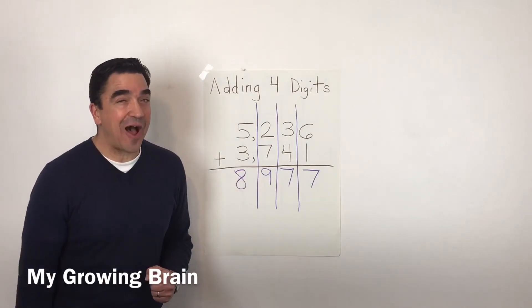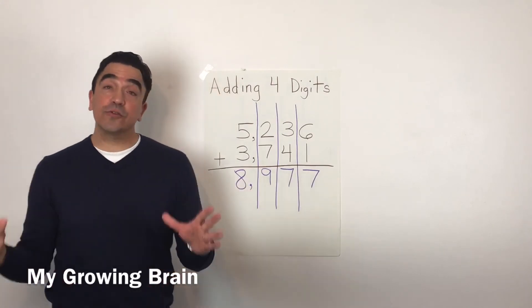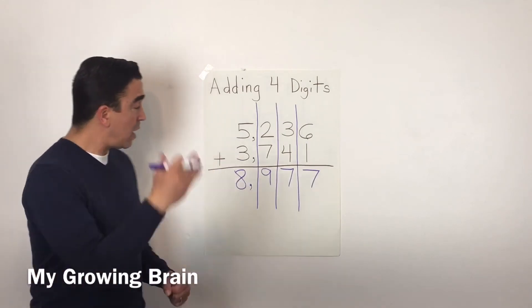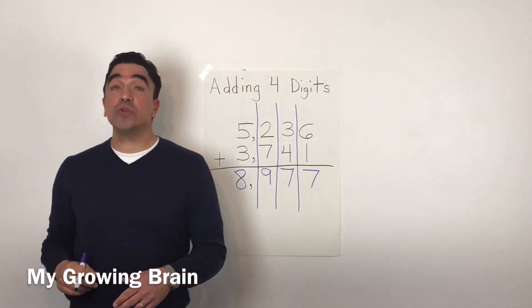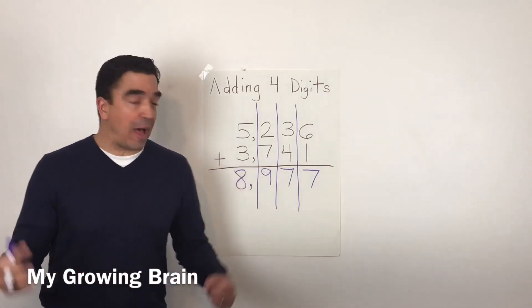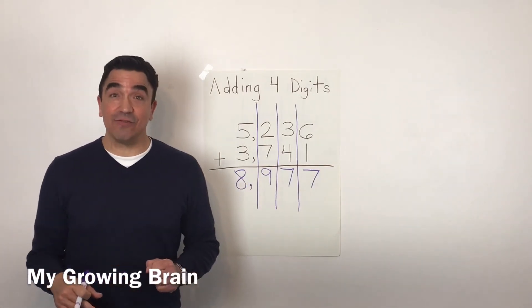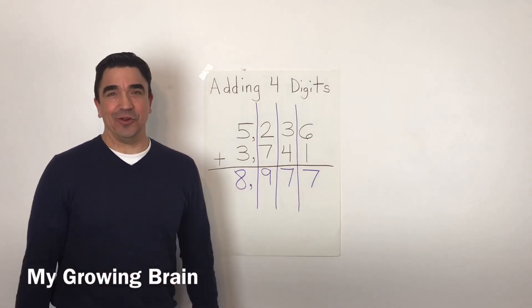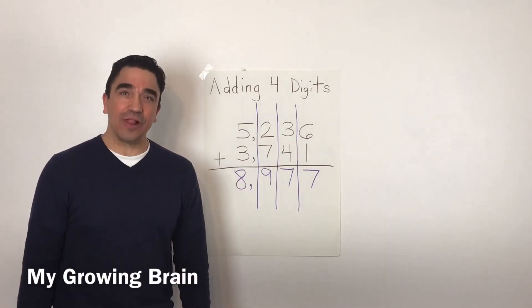Don't forget your comma. So, 5,236 plus 3,741 equals or gives us a sum of 8,977. And don't forget, the sum is the answer to an addition problem. And that concludes our lesson.